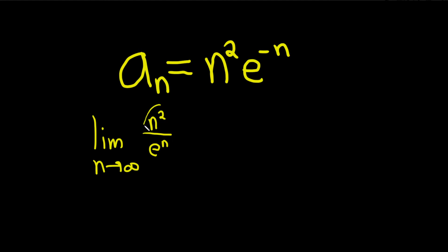This is a quadratic, it's n squared. This is an exponential. Exponentials grow faster than quadratics. So this limit is equal to zero because the bottom grows faster.